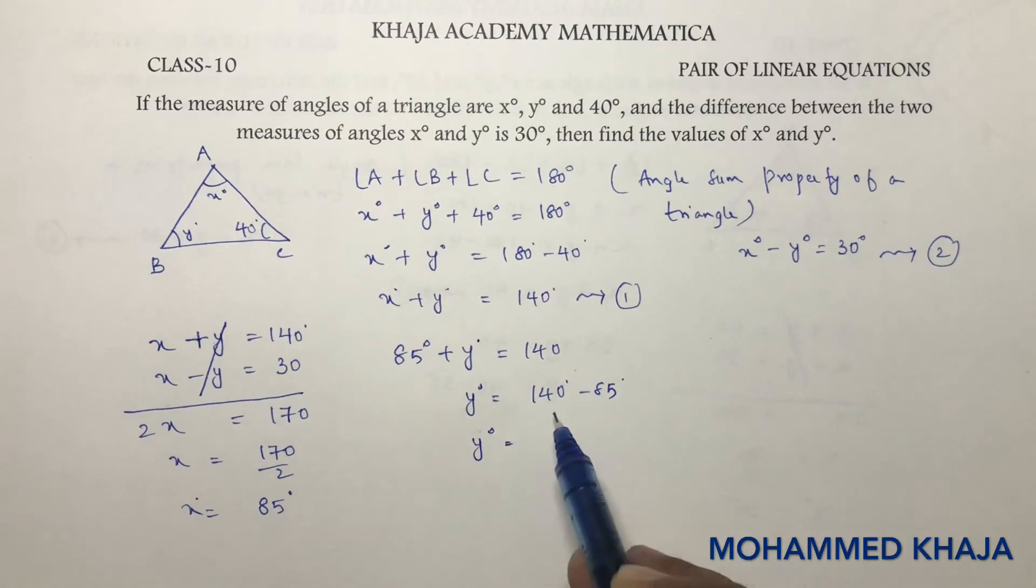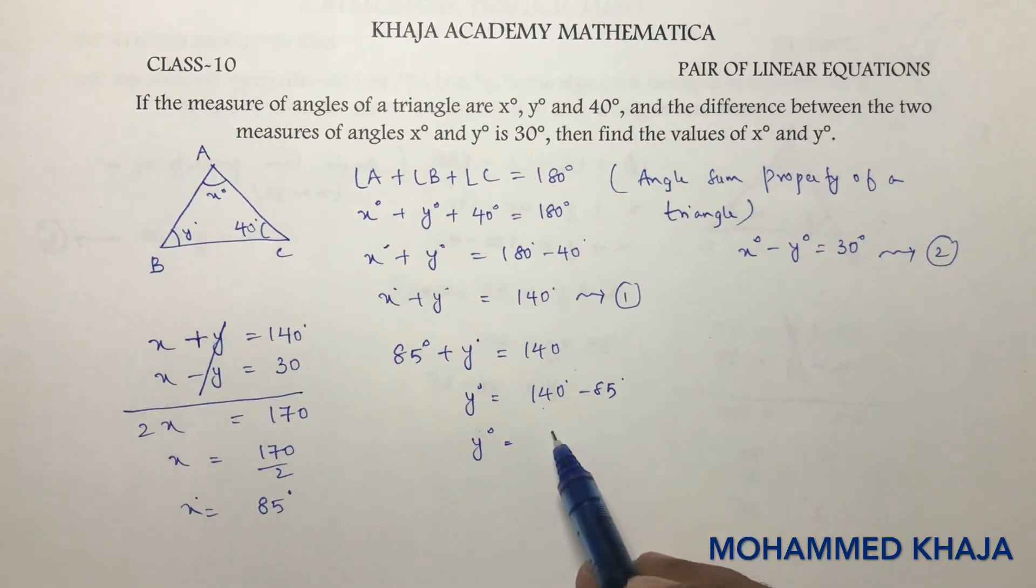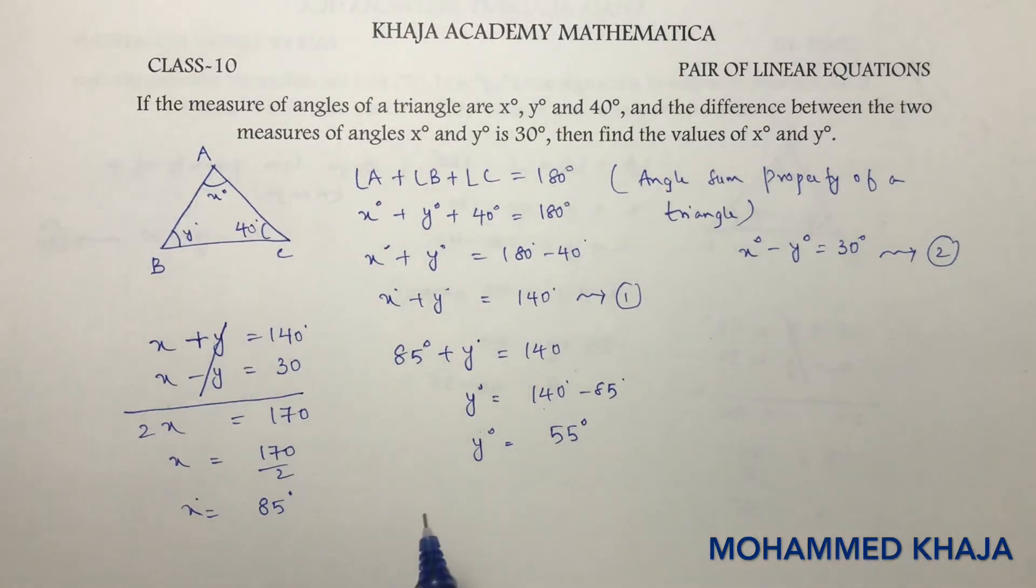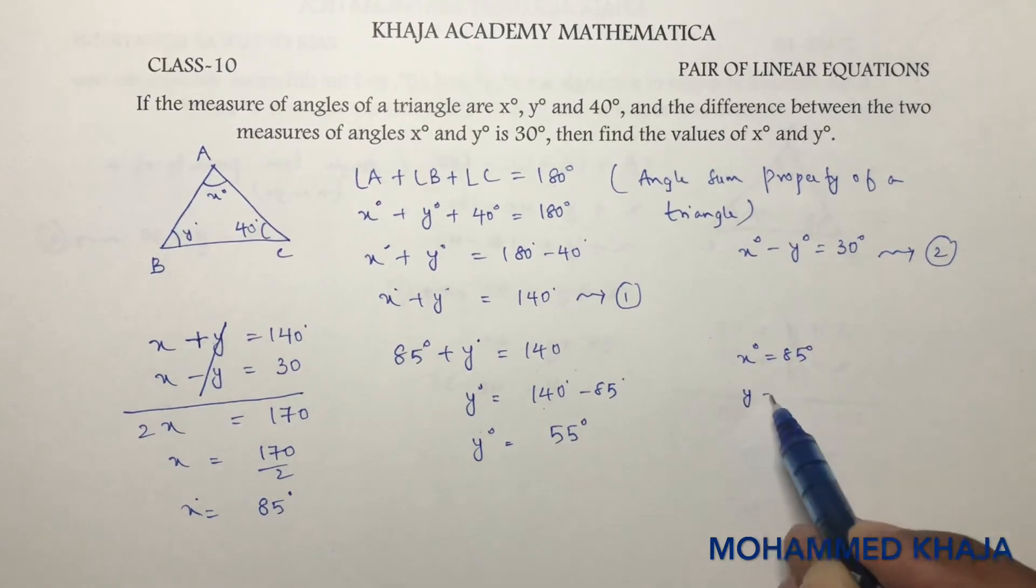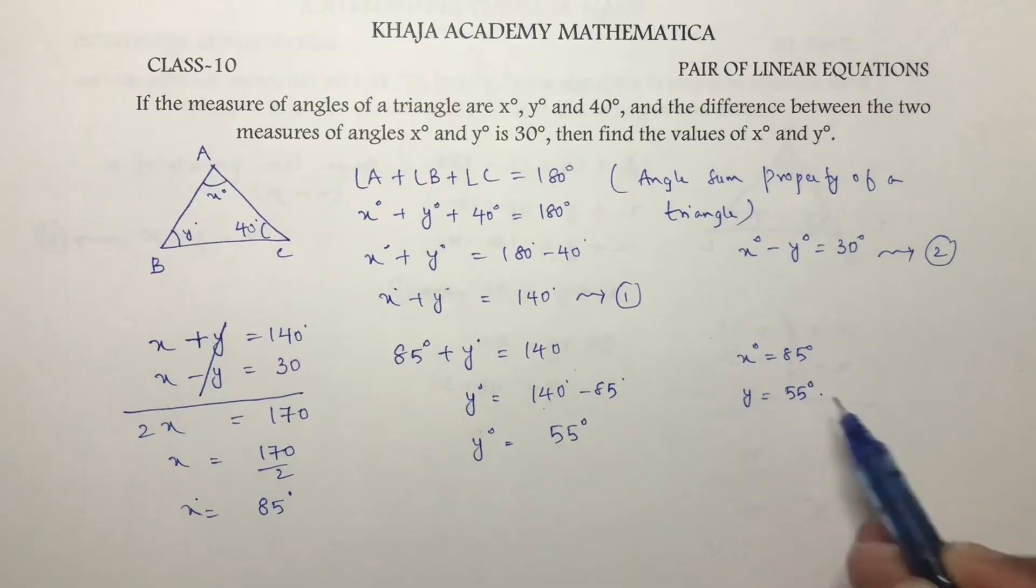So the values of x and y are: x is 85 degrees and y is 55 degrees.